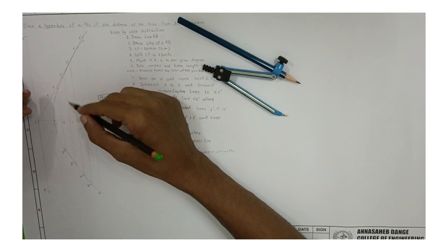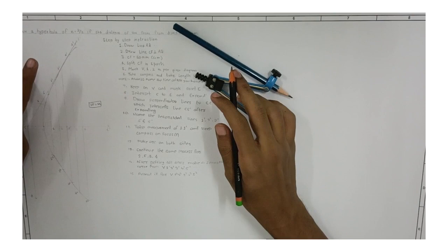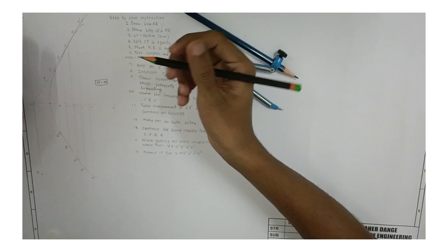When you have done the arcs on both sides, make a smooth curve and join them. Most importantly, name all the points after you are done drawing. It is helpful to understand the drawing and it also helps the examiner to know that you have done the process and it is not a copy.